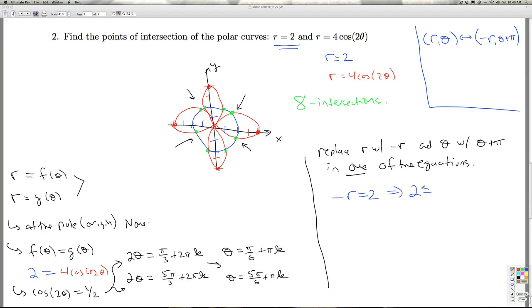So now I got r is negative 2, r is negative 2. And then I keep this one the same. So you do the replacement on just one of them. So now I get this equation.